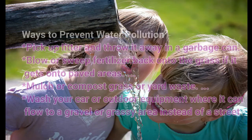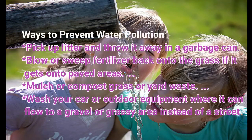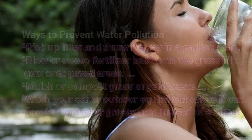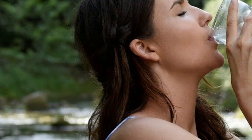Ways to prevent water pollution: pick up litter and throw it away in a garbage can; blow or sweep fertilizer back onto the grass if it gets onto paved areas; mulch or compost grass or yard waste; wash your car or outdoor equipment where it can flow to a gravel or grassy area instead of a street.